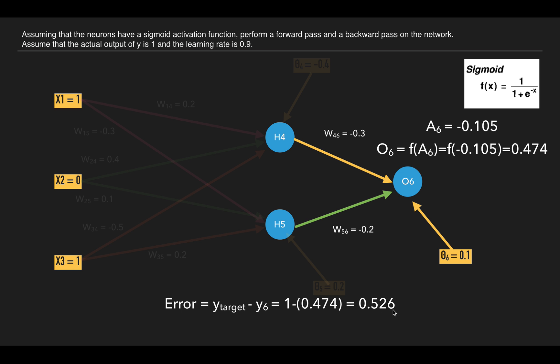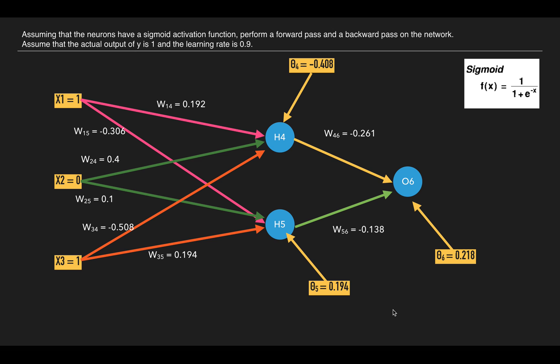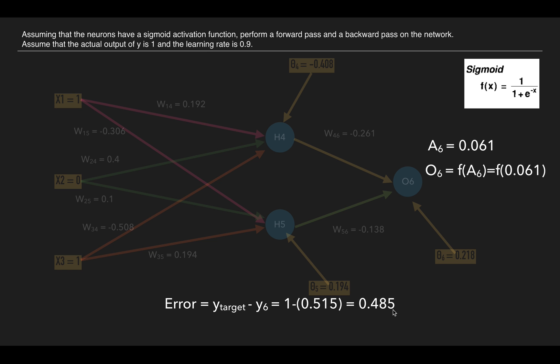Previously it was 0.526, so error is reduced. This is only one epoch and only a single training data set, so the values are not improving as expected. If you have more training samples and more epochs, it will reduce and our neural network would be optimized.